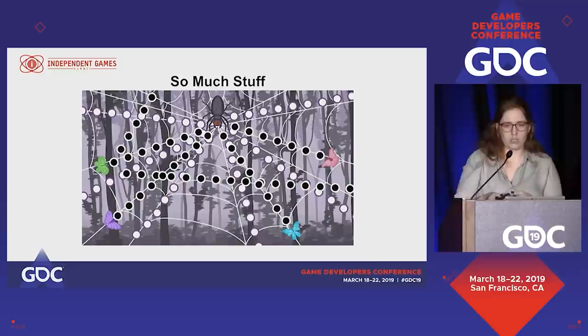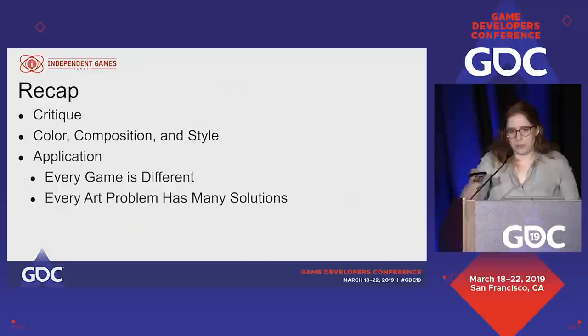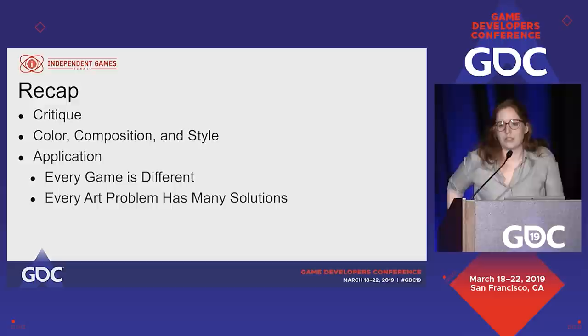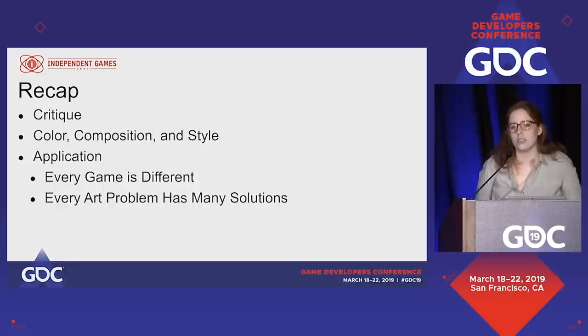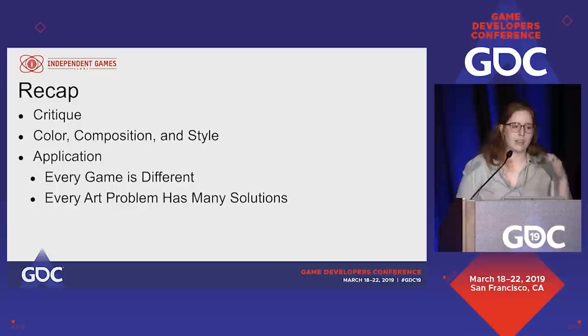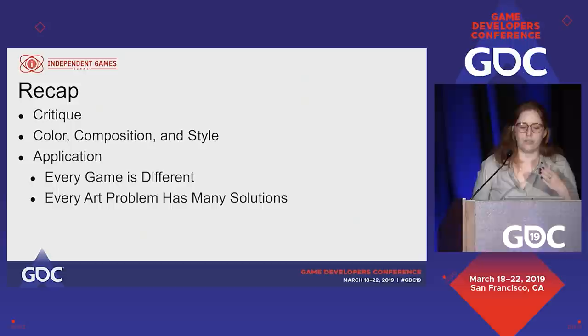So we talked about critique — how we do it instinctively and a good way to think about it for actual game development. We talked about color, composition, and style and how those affect our game visuals. And we applied it. Hopefully you can now apply these to your own game visuals. Every game is different — these solutions are optional. You can use a lot of different strategies with the elements I've talked about to solve gameplay problems, figure out what suits your game best. Thank you. I'm Ali.